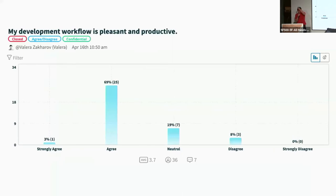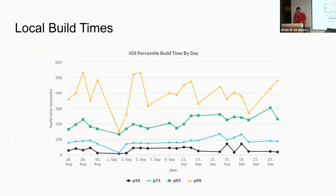How pleasant and productive the development workflow is — we're actually doing pretty well on this. Most people are in the 'agree' category. But one of the largest complaints, which our telemetry also shows, is build times — local build times. If you're in the mobile space, you hear a lot about this. It's really never fast enough, unless it reaches a certain threshold where it's instant or interactive all of a sudden.